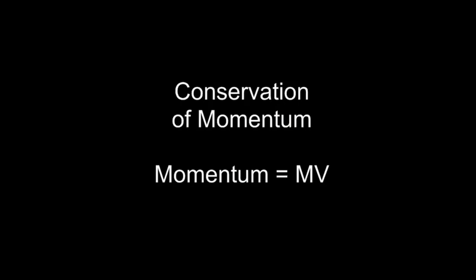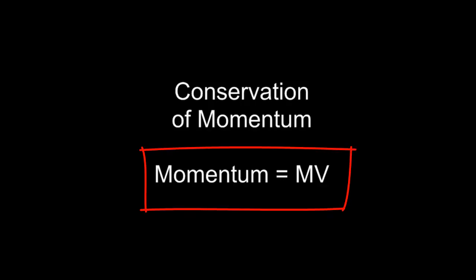To help answer this question, we'll turn to the concept of conservation of momentum. Conservation means that what you start with is what you end with. So if you start with zero momentum, then you'll end with zero momentum. Momentum is defined as mass times velocity, or mv. If you have a large mass and large velocity, you'll have a lot of momentum. If you have little mass and little velocity, you'll have very little momentum.